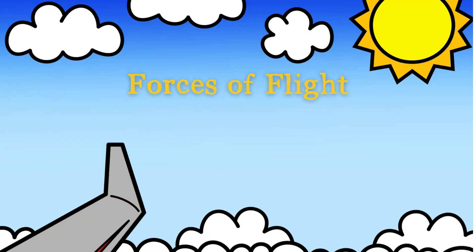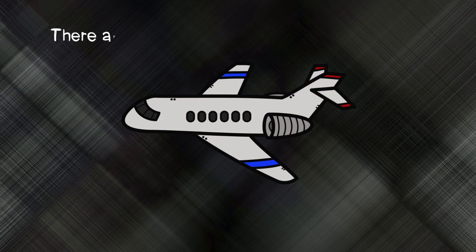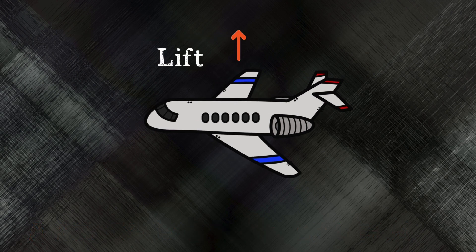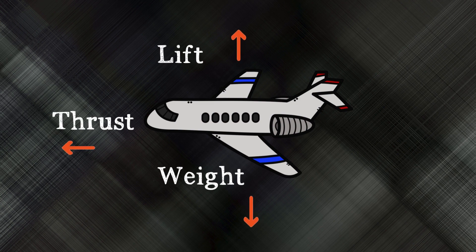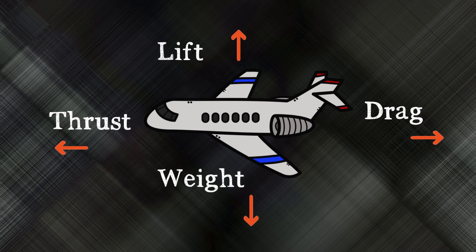It takes a combination of forces to move an airplane through the air. There are four forces acting on an aircraft. A force is a push or a pull. These forces are lift, weight, thrust, and drag.